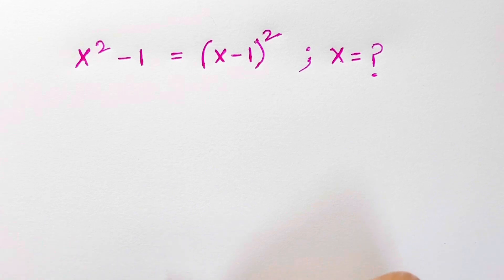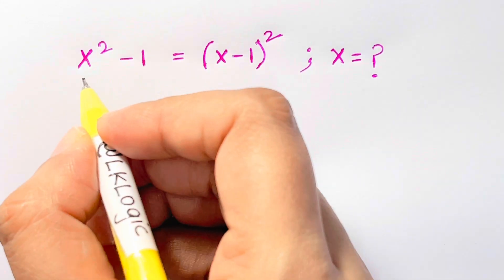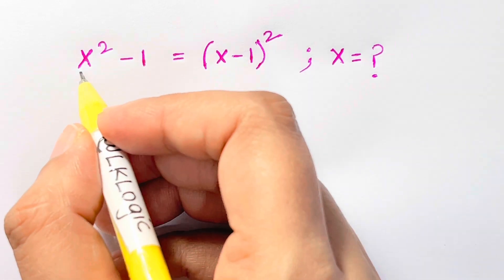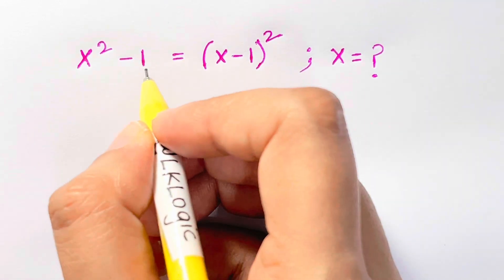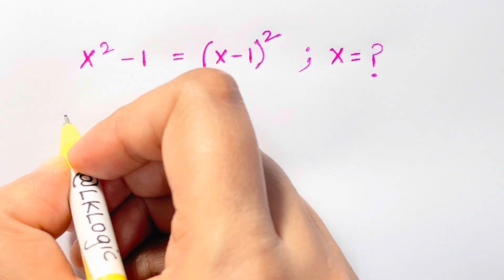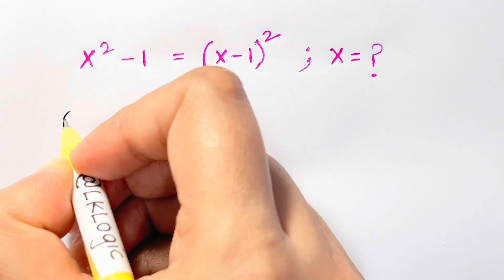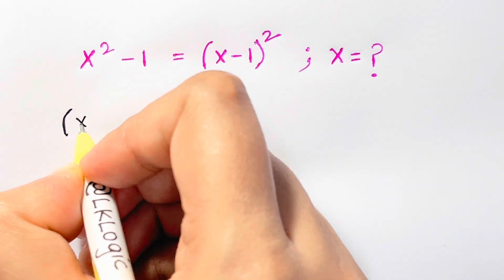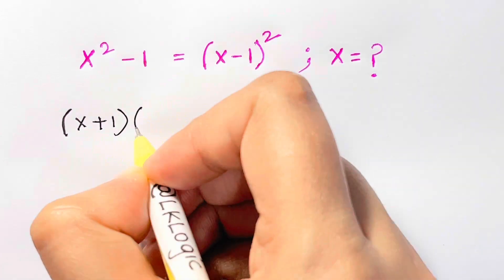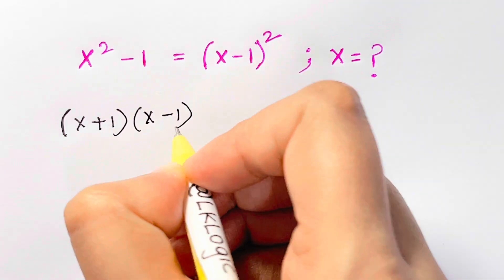Now, the first step, what we can do is, as you can see here, it looks like an identity, isn't it? a squared minus b squared. 1 squared is 1. So let me put it into an identity, that's a plus b times a minus b. So a is x, x plus 1 times x minus 1 for this part.